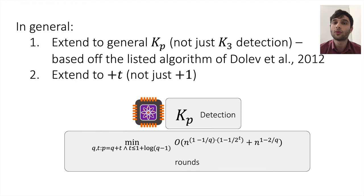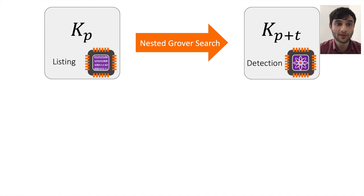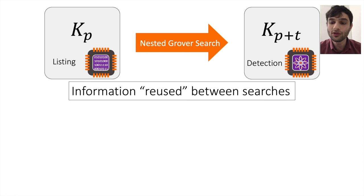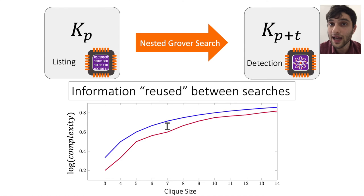To summarize: we show the first nested Grover search in the distributed setting, taking listing algorithms of a given size in the classical distributed setting and turning them into detection algorithms for cliques of larger sizes in the quantum distributed setting. The key reason nesting Grover search works is that information is reused between searches, because we only pay for communication costs in the distributed setting — information communicated at the start can be reused throughout a Grover search. Finally, we show a separation between listing and detecting cliques of all sizes in the quantum distributed setting, which is currently unknown in the non-quantum setting. Thank you very much.